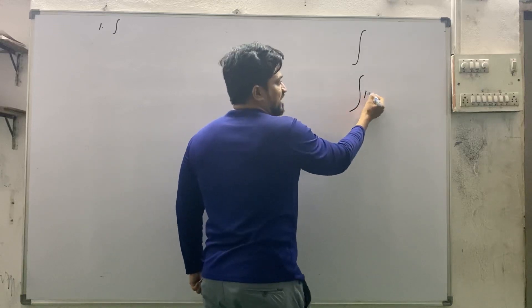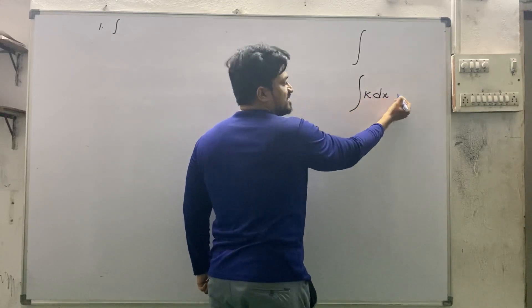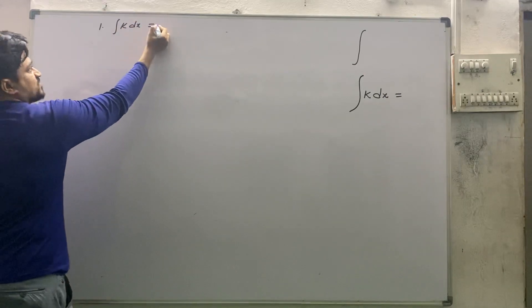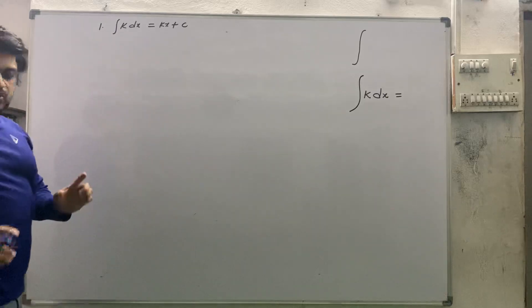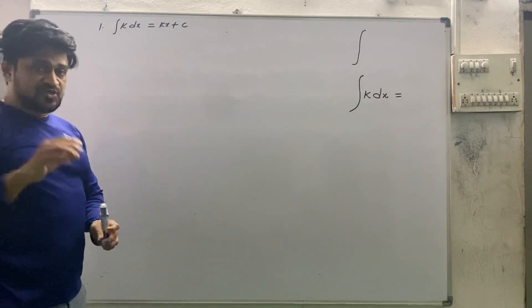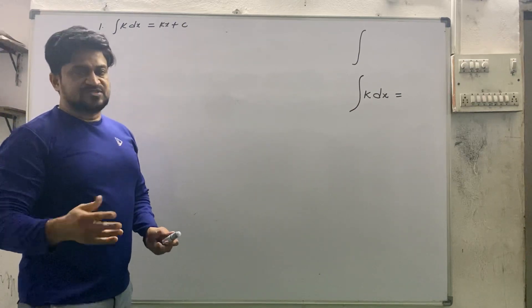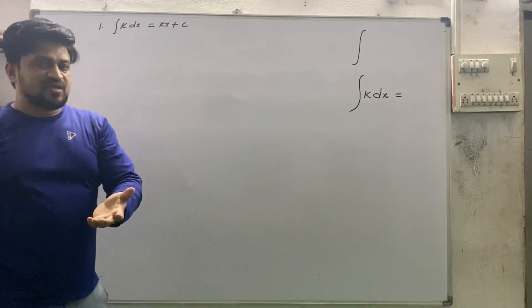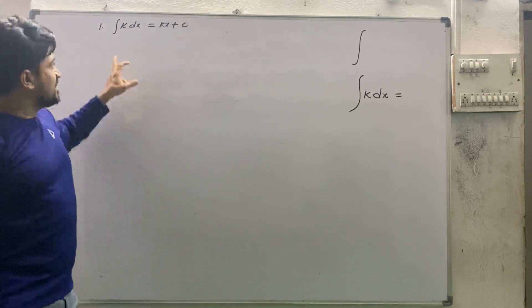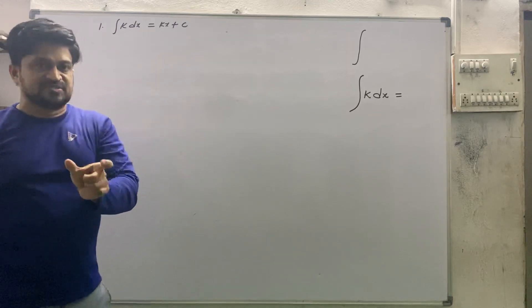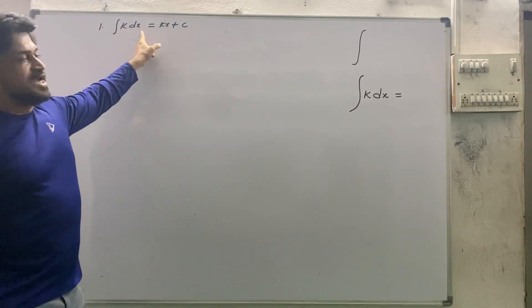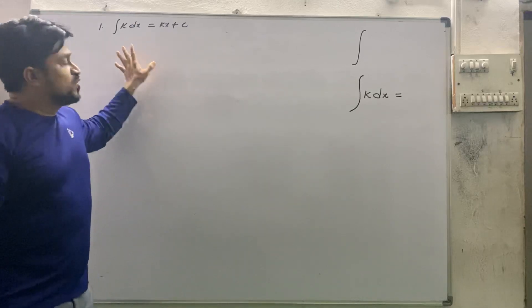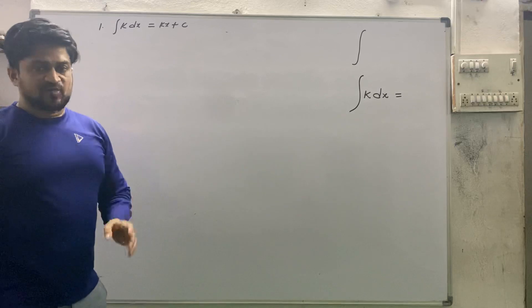If I write: integral of k dx, the formula is: integral of k dx = kx + c. You need to memorize this. In the second video you will learn how to use these formulas. Copy each formula into your notes. Write each formula a minimum of ten times so you can memorize it easily. For example: integral k dx = kx + c.